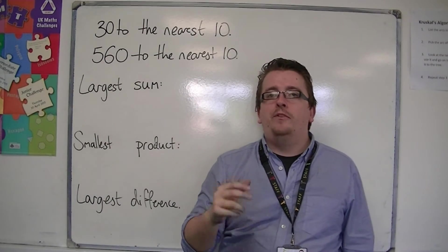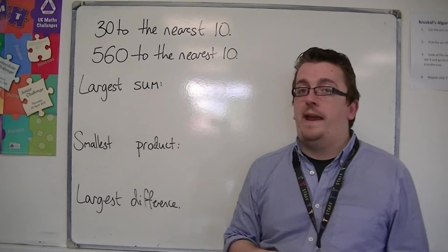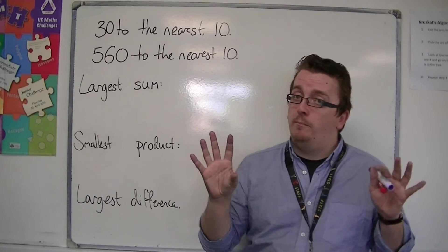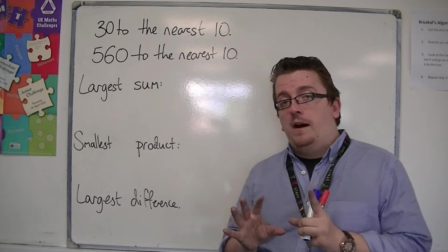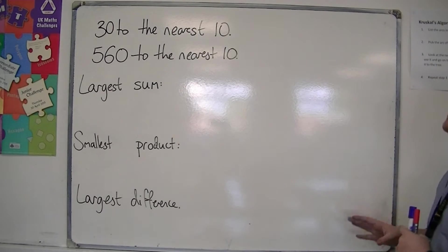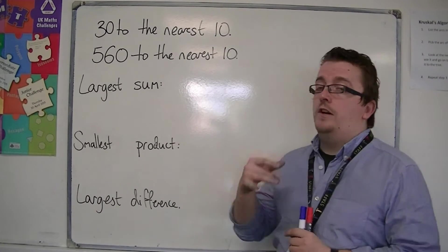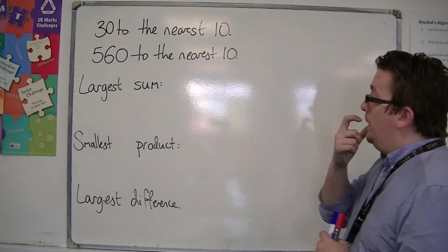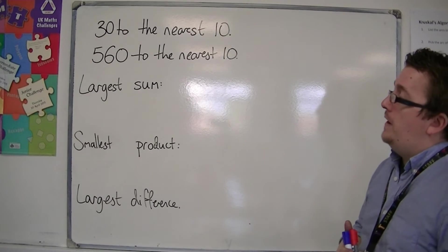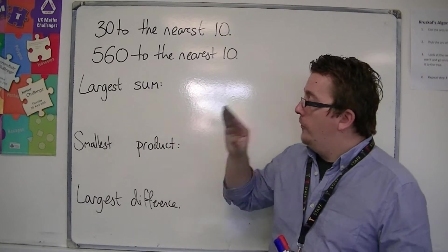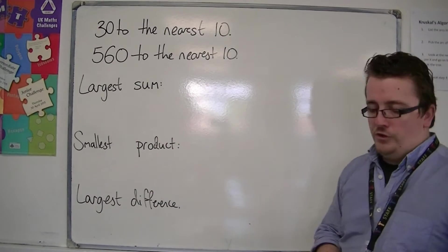Both of these numbers have been rounded to the nearest ten. So I don't know what the original numbers were, but they have now been rounded to the nearest ten, and I've got 30 and 560. So what we've been asked to do is find the largest sum, the smallest product, and the largest difference.